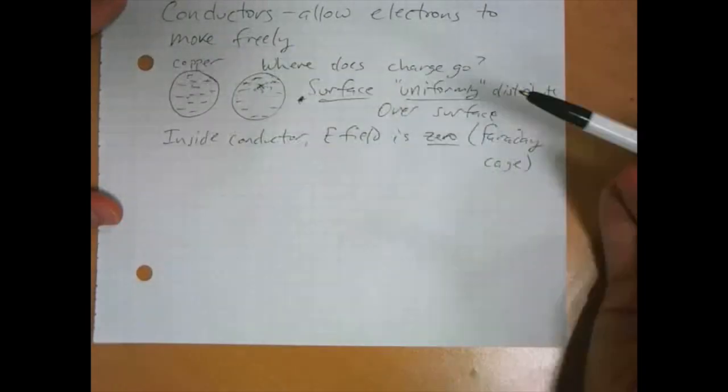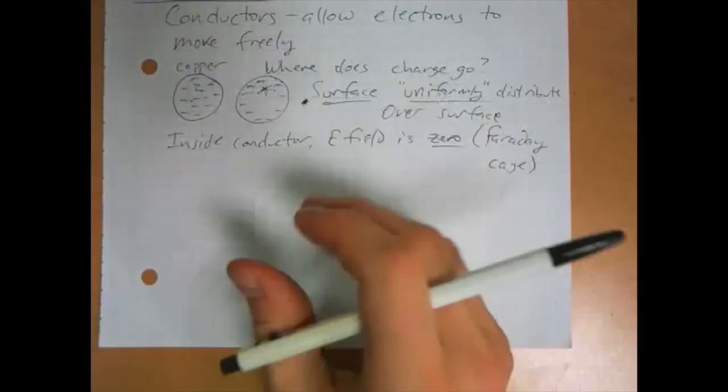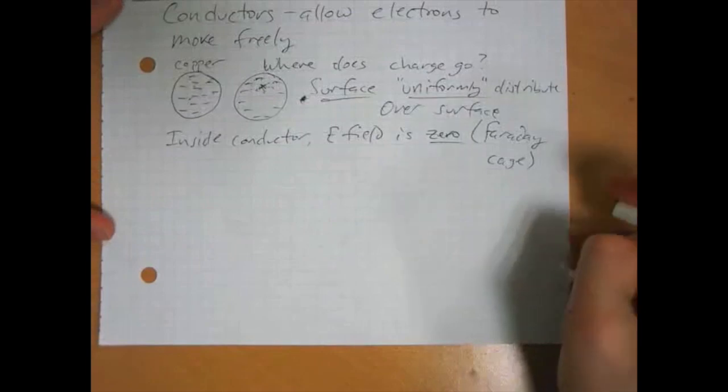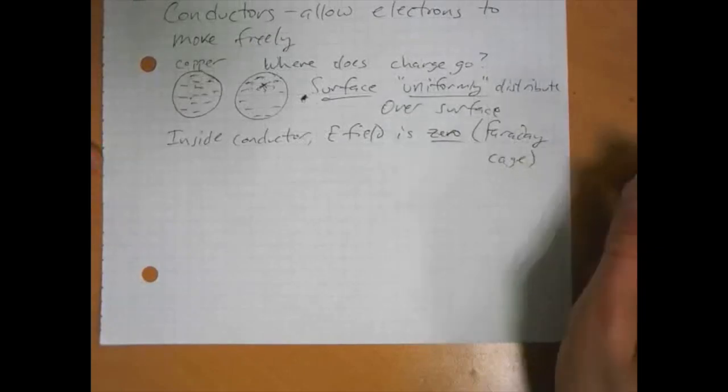These Faraday cages which are just conducting shells are used to shield sensitive equipment so that they aren't impacted by electromagnetic things going on, like external electromagnetic things, like the cosmic background radiation or random sunspot activity or whatever.